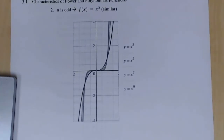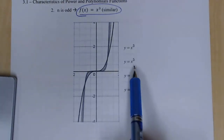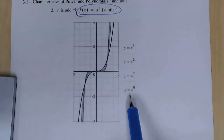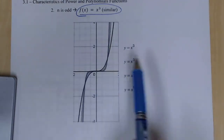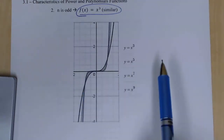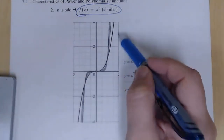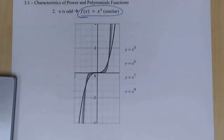If n is odd, the function is similar to y = x³. Graphing x³, x⁵, x⁷, x⁹, you notice they all go up on the right and down on the left, getting flatter at the origin. We're going to use the fact that even functions are similar to quadratics and odd functions are similar to cubics to figure out the end behavior of polynomial functions.